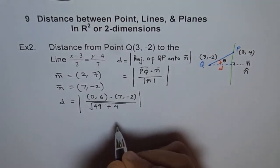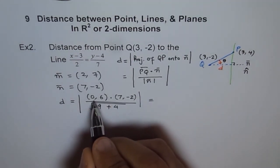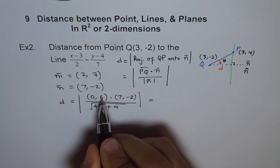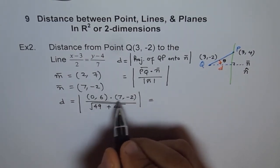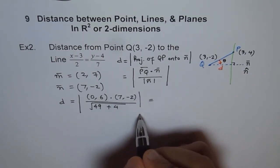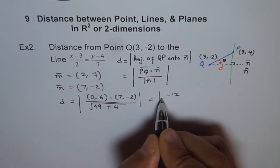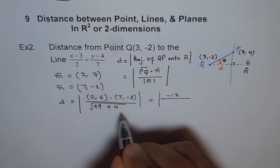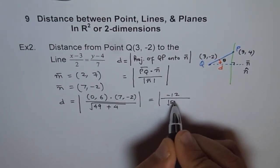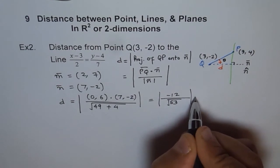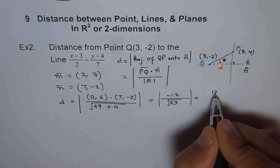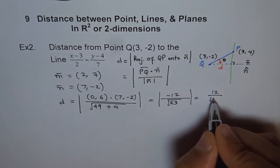And absolute value of this. So if you calculate this, 7 times 0 is 0 and 6 times 2 is 12 with minus sign. But absolute makes it positive. Let me write minus first here and then we will do positive of this. And this is √53. And absolute value of this is 12 over square root of 53.